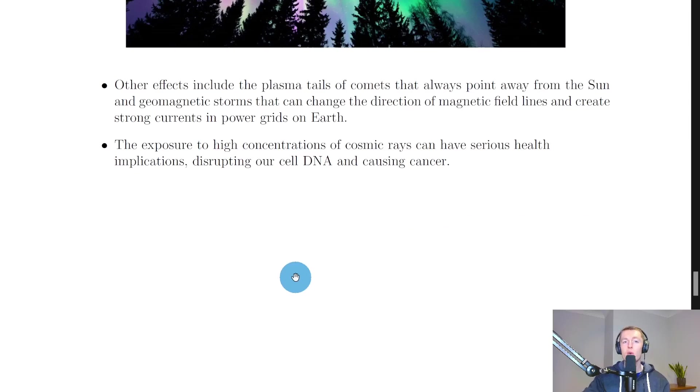Going back to the notes, there are other effects produced by the solar wind. Other effects include the plasma tails of comets that always point away from the sun and geomagnetic storms that can change the direction of magnetic field lines and create strong currents in power grids. You should also be aware that exposure to high concentrations of cosmic rays can have serious health implications, disrupting our cell DNA and causing cancer. It's thought that if you travel a lot and go on airplanes, you'll experience a higher number of cosmic rays than someone who stays on the ground, and therefore the risk to your health through ionizing radiation is going to be bigger.